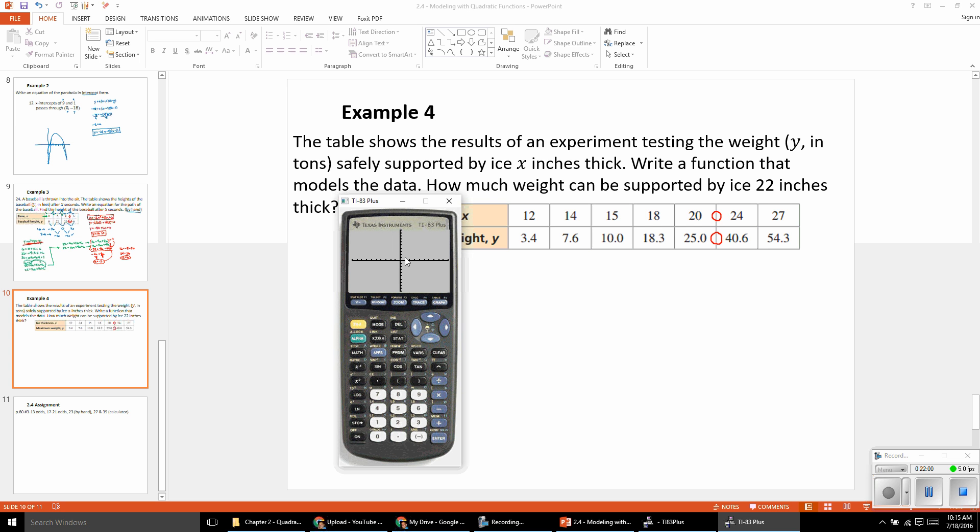So then we're going to hit the graph key, and nothing appears, but that's because our window is only going to 10. Our first x input was at 12. Now, there's a nice feature called zoom stat. I think it's number nine. And if we hit enter, it will zoom to fit our statistics. And you can see it looks like it could be a line, but there's definitely some curvature happening there. So it certainly does look like it could be a piece of a parabola, data, although we probably could make a decent best fit line with that data as well.